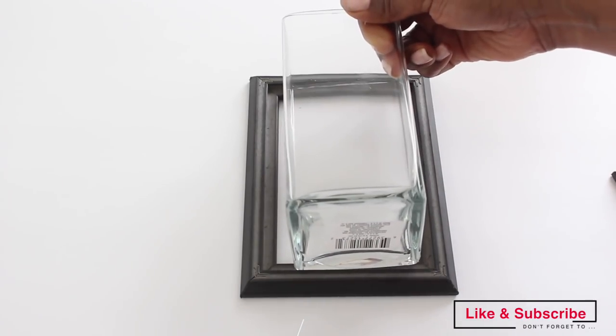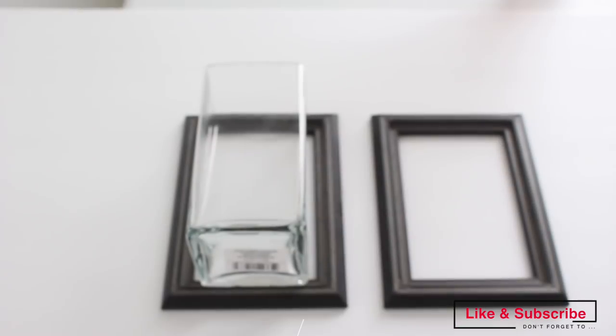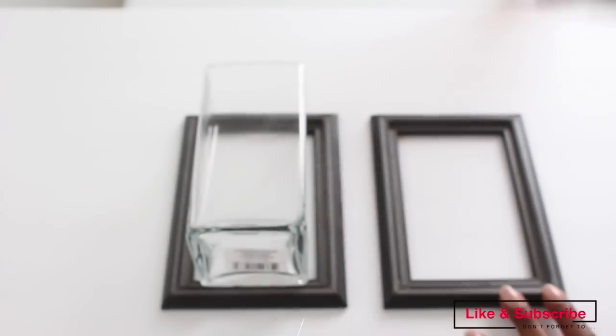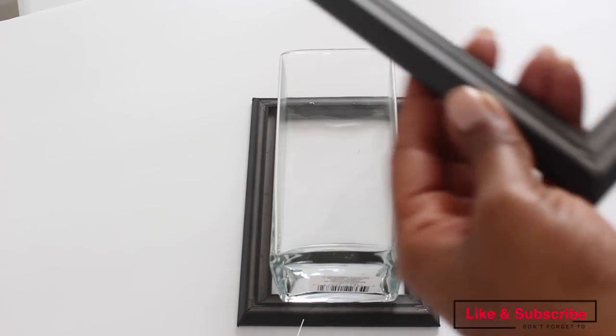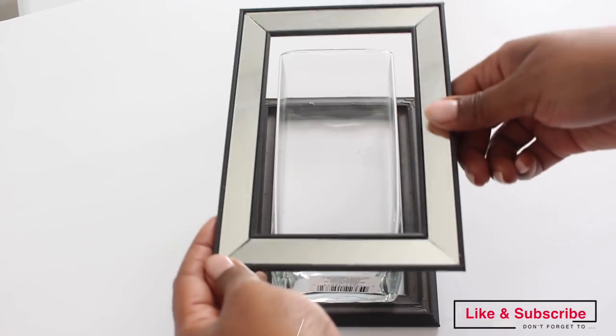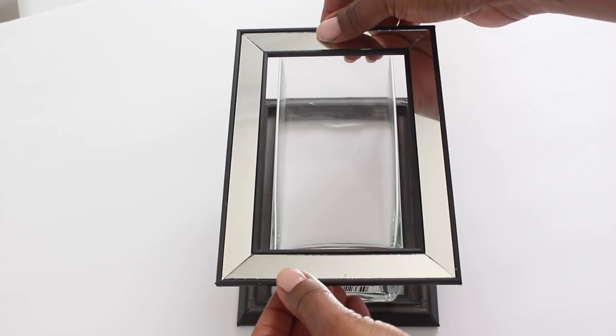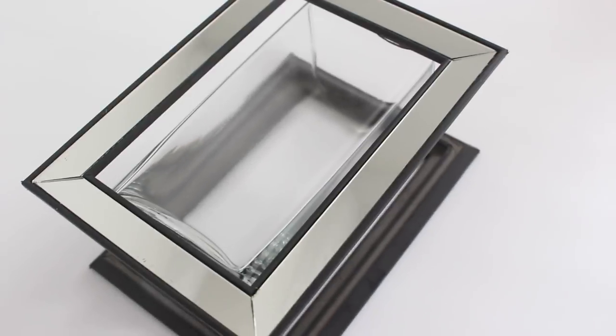Now I'm going to repeat the same process and put E6000 in the middle of the other frame. Then I'm just going to place it on top with the mirror side up and make sure that's centered as well. I'm going to let it dry for 24 hours.